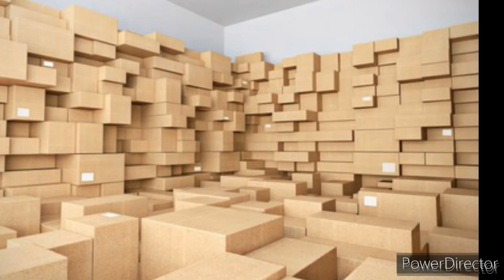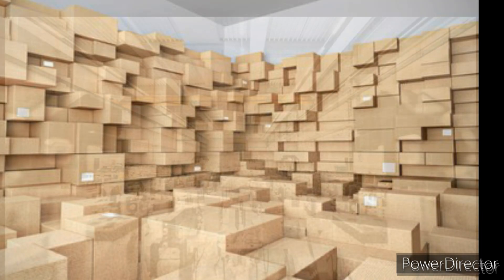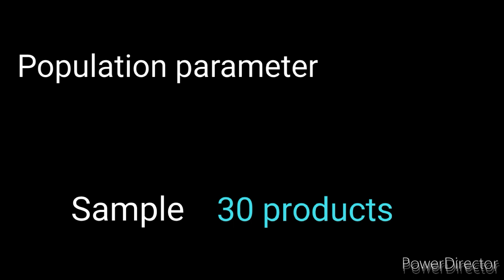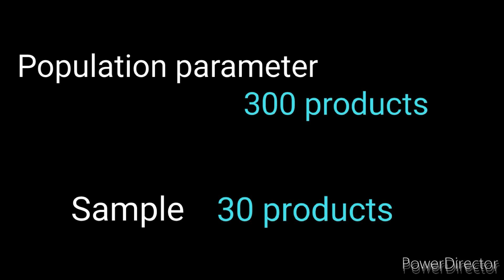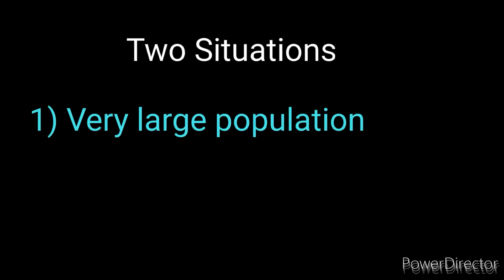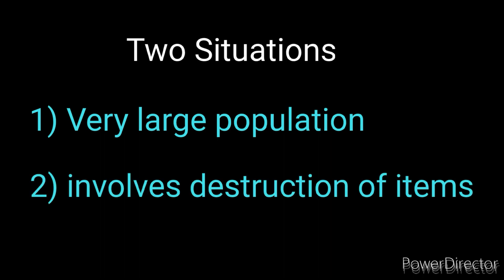Let's say we have a factory that produced 300 products, and we're interested in finding out the percentage of products that are faulty. In order to find out whether a product is faulty, we have to destroy or break it. We can't break all 300 products because it will be expensive. So we are forced to select a sample of maybe 30 products, and the results from that sample represent the whole population parameter — the total products produced by the factory. There are two situations that require us to use a sample: number one, if the population is very large; number two, if it involves destruction of products.